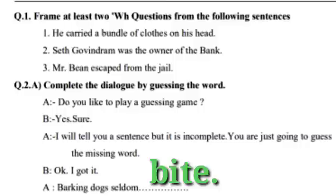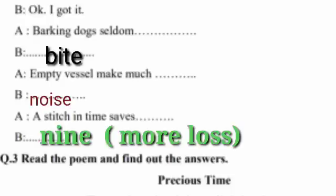Question number 2: Complete the dialogue by guessing the word. You have to guess the word and complete the dialogue. A and B are both participating in this dialogue. First: Barking dog — answer is bite. Second: A says empty vessel make much — answer by B is noise. Third: A stitch in time saves — answer is nine. A stitch in time saves nine means no more loss.